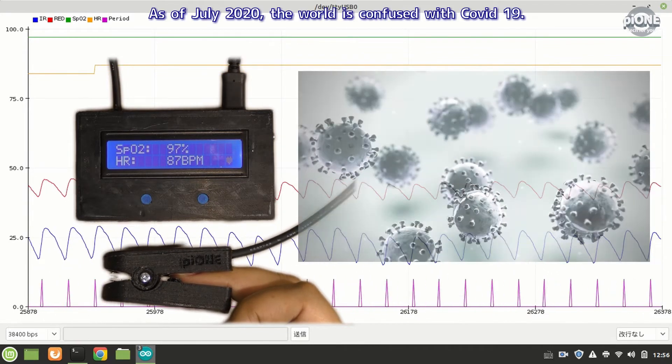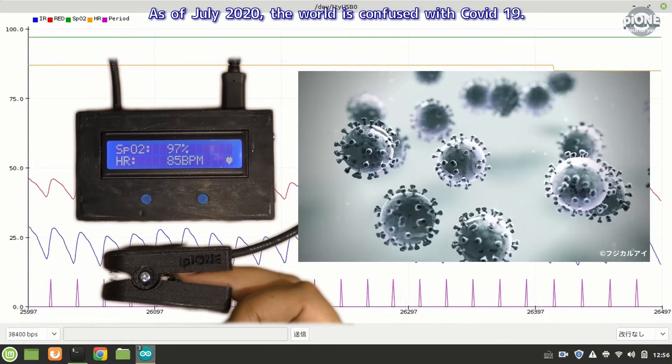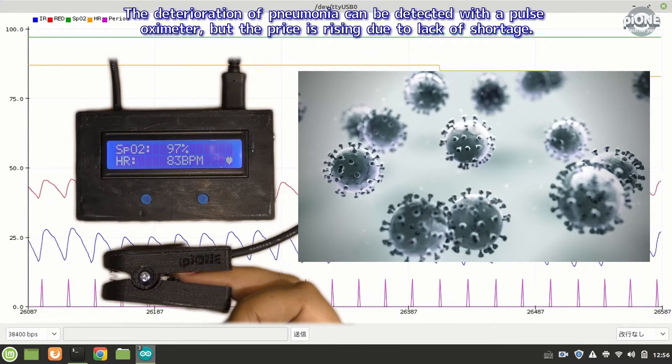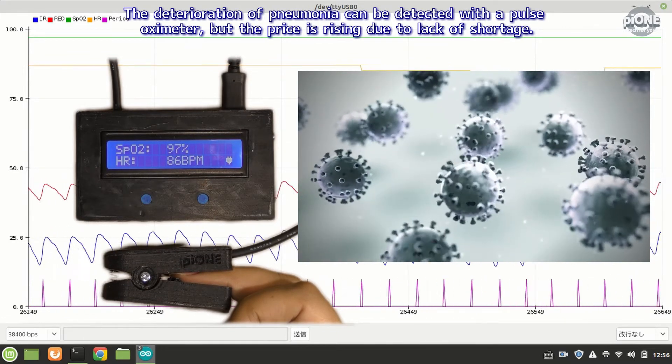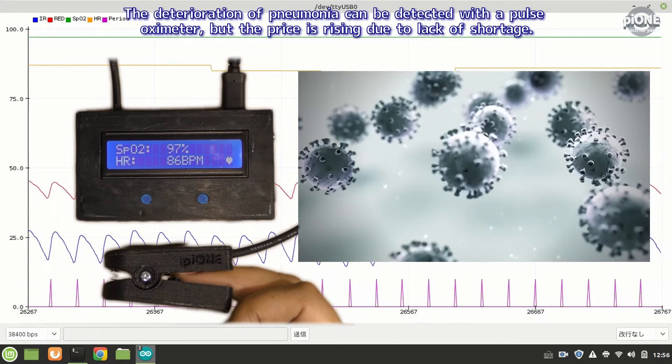As of July 2020, the world is confronted with COVID-19. The deterioration of pneumonia can be detected with a pulse oximeter, but the price is rising due to lack of shortage.